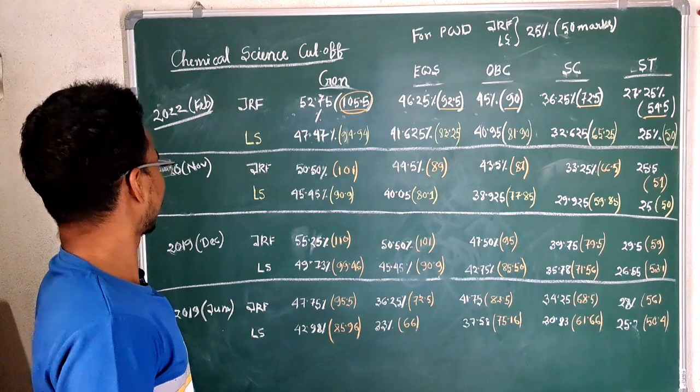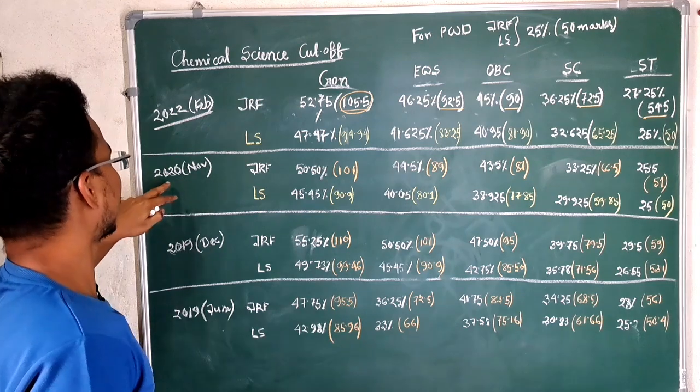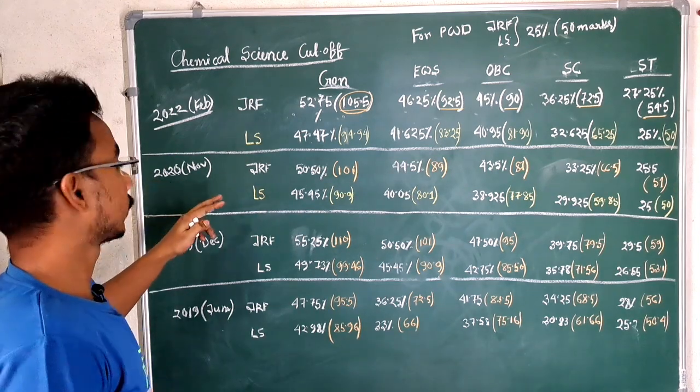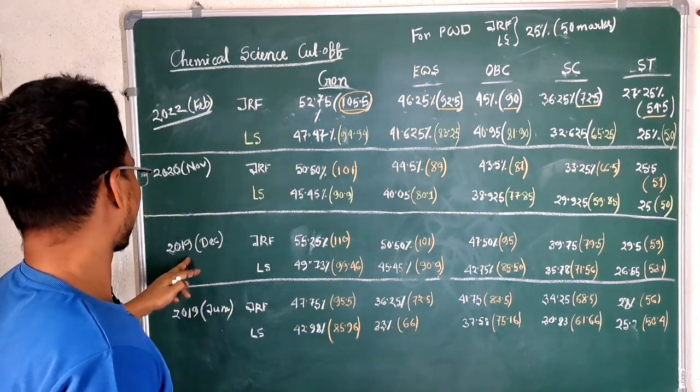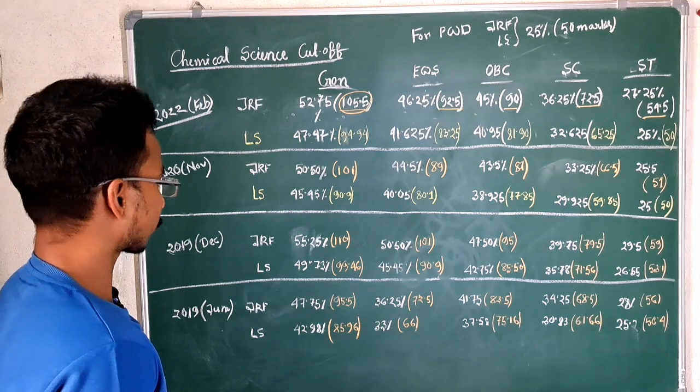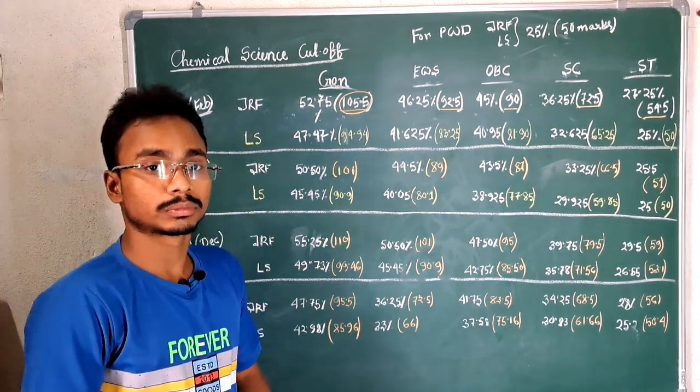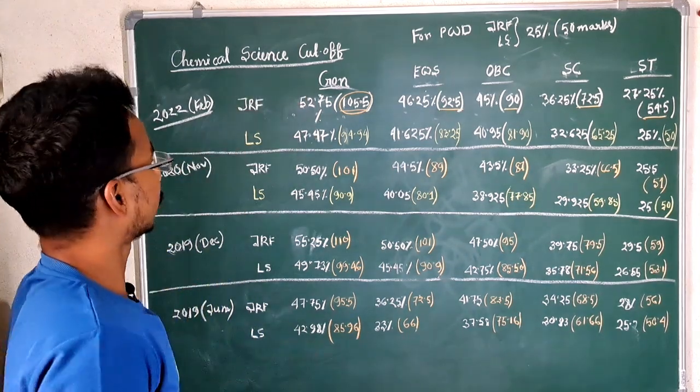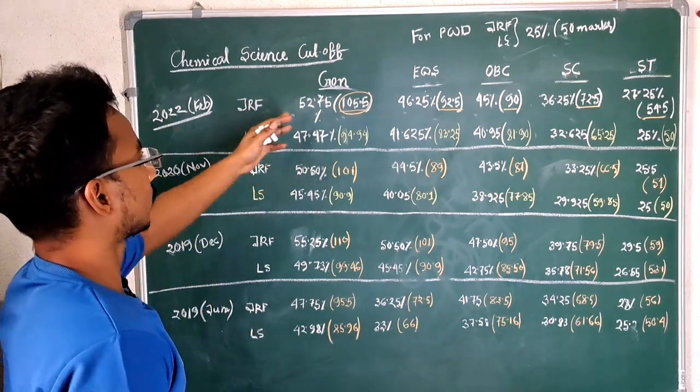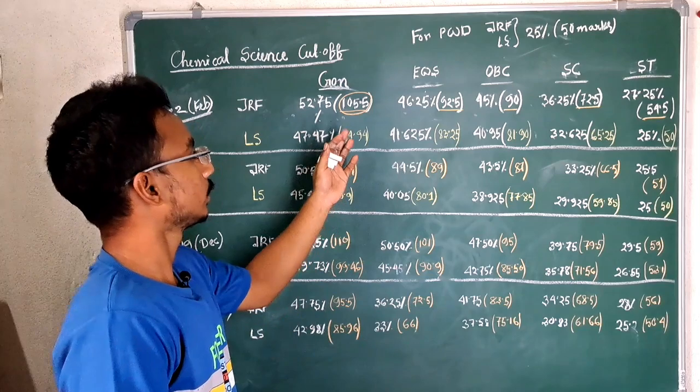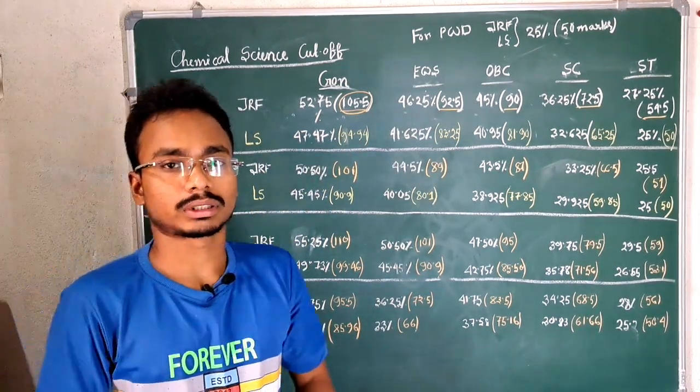So I wrote 2022 February, NET 2020 only one CSIR NET happens that year November month, and 2019 December, 2019 June. We will discuss last four CSIR NET examination cutoffs so you can compare with these cutoffs. I wrote about JRF and LS. I converted the percentage into numbers so you can easily calculate or compare the cutoffs with your expected cutoff.